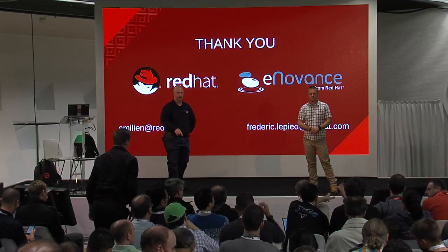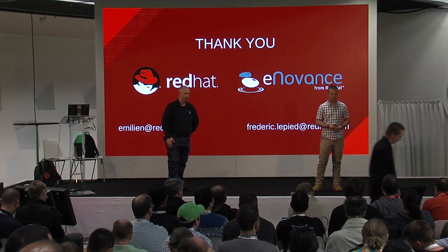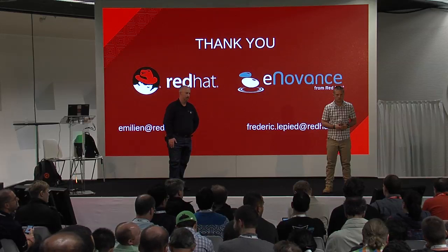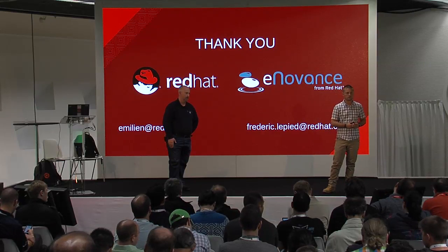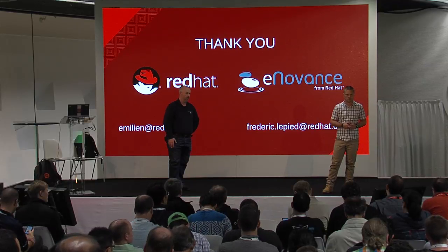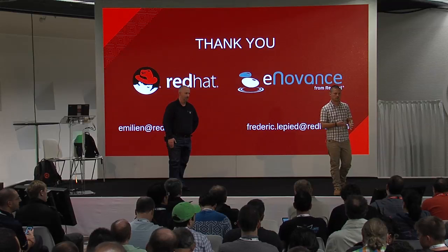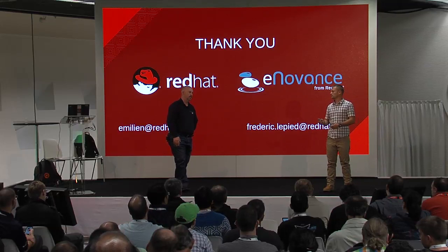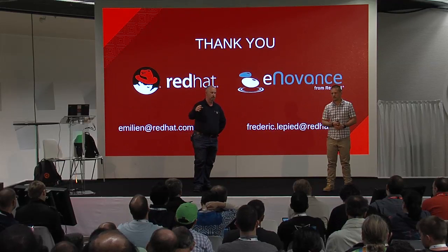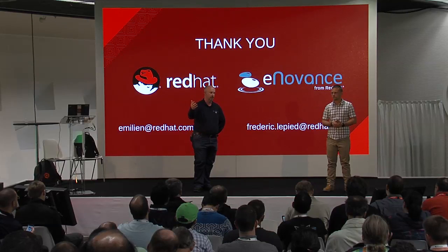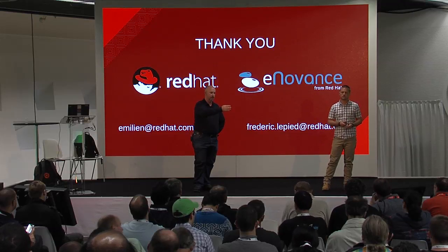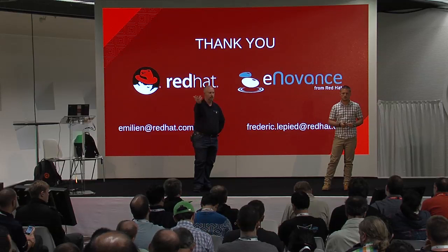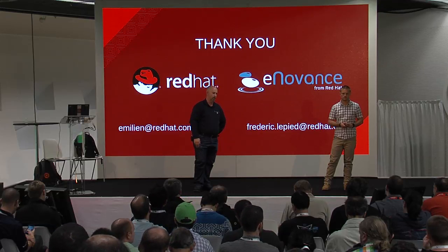Another question asked why Ansible and not mCollective, which comes with Puppet as an orchestrator. The answer: mCollective is more for doing a distributed task — doing the same task on all nodes at once. It doesn't do one task, wait for it to finish, and then do the next. That's not how mCollective is designed — it's more distributed. With Ansible, sequential orchestration is native and already designed, whereas with mCollective you'd have to build on top of it.